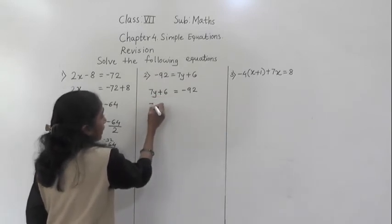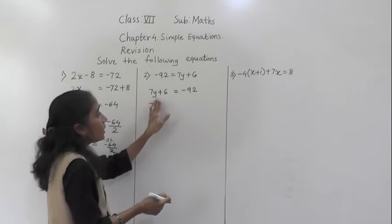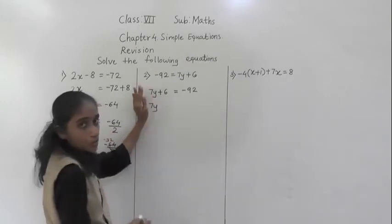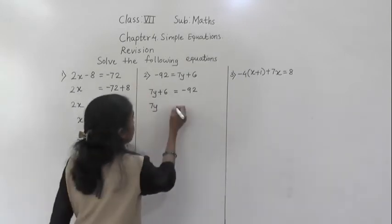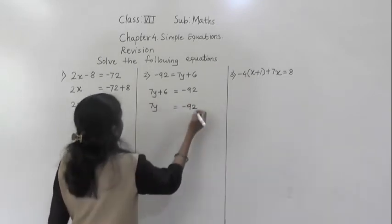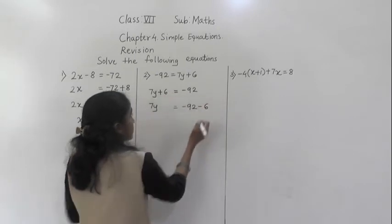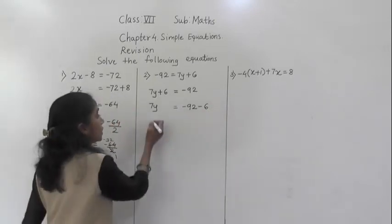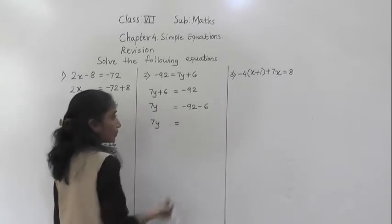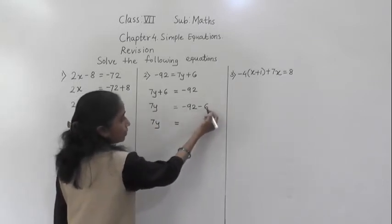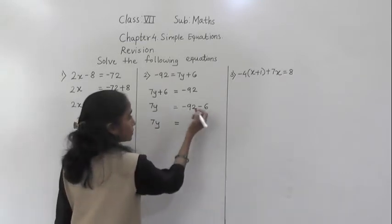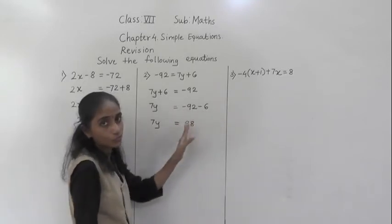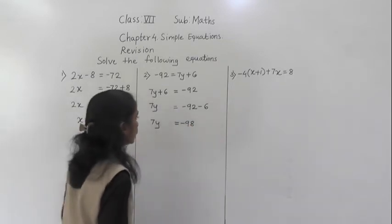Now 7y we have to keep as it is, because 7 is with the variable. Who is the lone number? 6 is alone, so we transfer 6 to the right hand side — it will become minus. So 7y is equal to minus 92 minus 6. Minus minus makes plus, so we add: 92 plus 6 equals 98. Both numbers have a negative sign, so the answer is also negative: 7y equals minus 98.